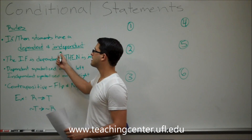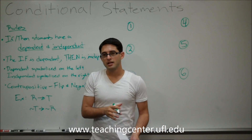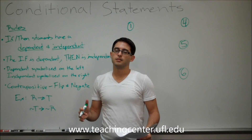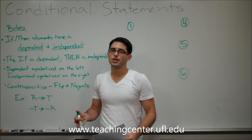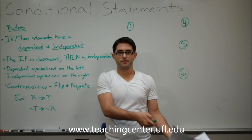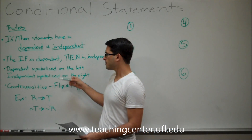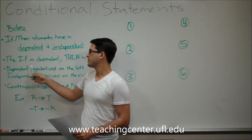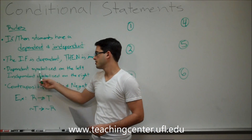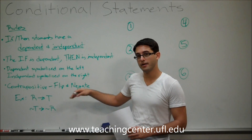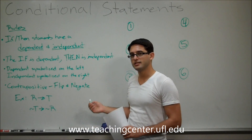In an if-then statement, you're always going to have a dependent statement and an independent statement. You're going to have a statement that can happen only if another thing happens — that's the dependent statement — and you're going to have an independent statement. In the if-then, the if is always the dependent statement and the then is always the independent. The dependent — the if — is always symbolized on the left side of the conditional arrow, and the independent is always symbolized on the right side.